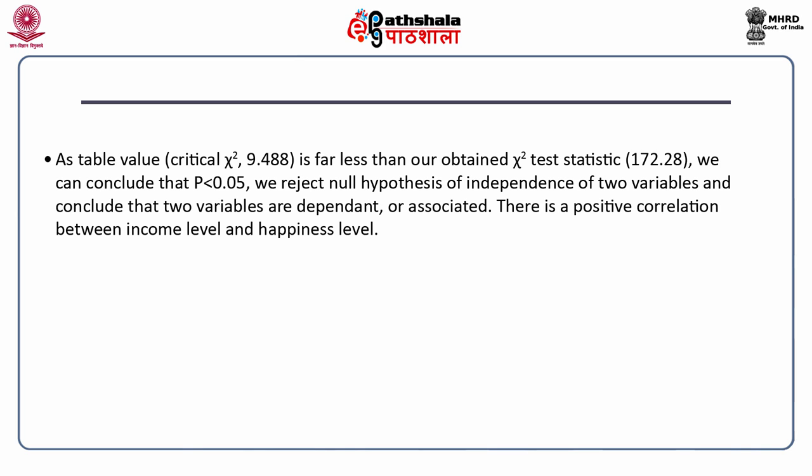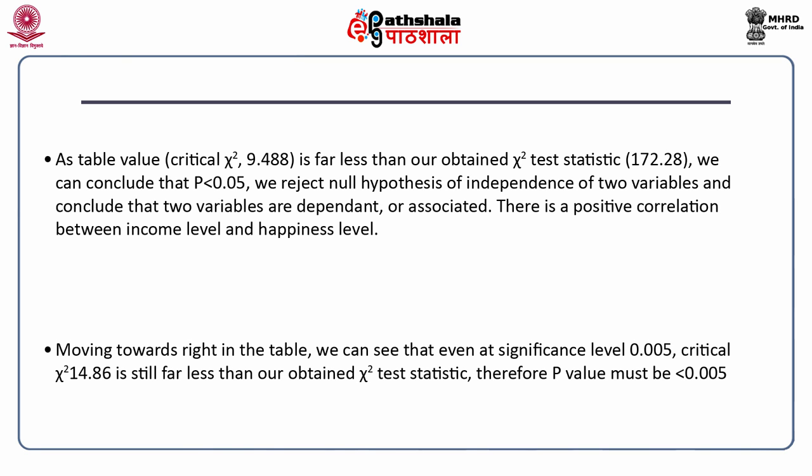Both variables — income level and happiness level — are correlated. Moving further right in the table, even at a significance level of 0.005, the critical chi-square is 14.86, which is still far less than 172.28. Therefore, the p-value must be less than 0.005 — statistically significant even at that stricter significance level.